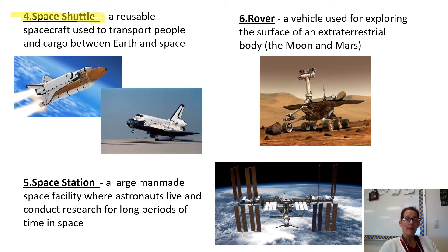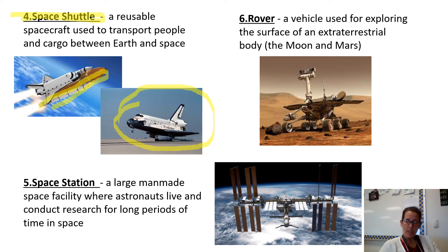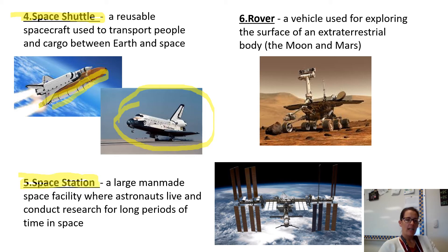The next word is space shuttle — a reusable spacecraft used to transport people and cargo between Earth and space. They're pretty cool. You can see it taking off right here into orbit, and then you can see it landing kind of like an airplane would on a runway.